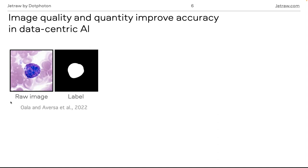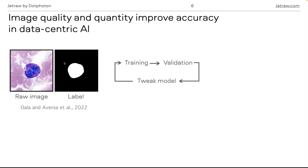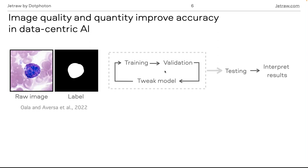Here is an example of a typical problem solved with AI. You have raw images — in this case, white blood cells — and a corresponding label, which is a mask. The goal is segmentation. The typical workflow is to train your network using raw images and labels, then go to validation using different scores to assess how well training performed. You can iterate until the network is well trained, then test it on a new dataset the network hasn't seen yet and interpret the results.